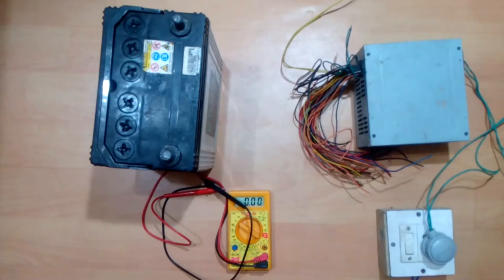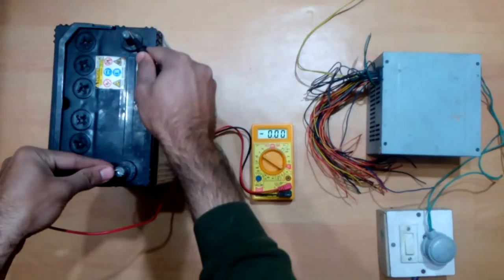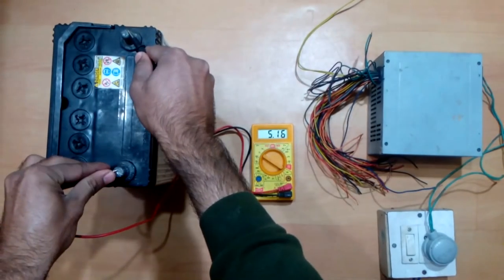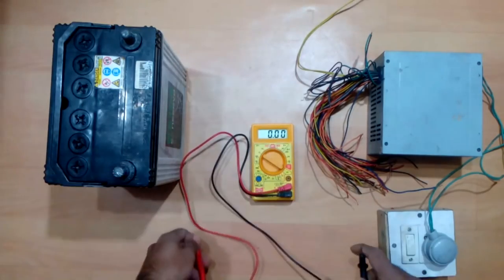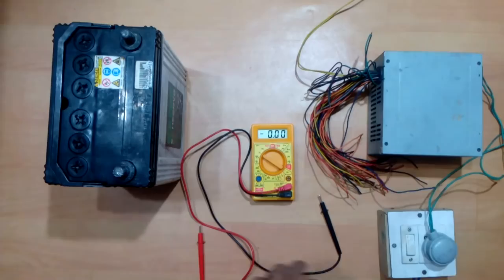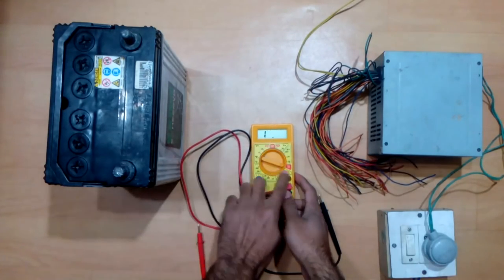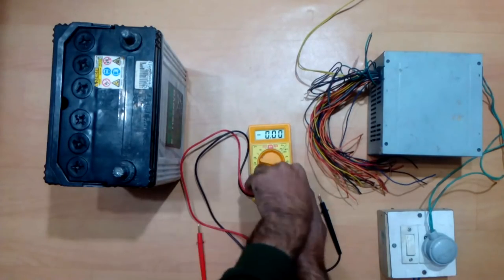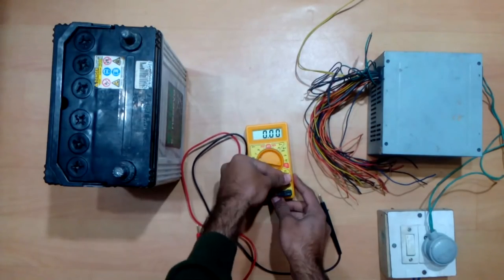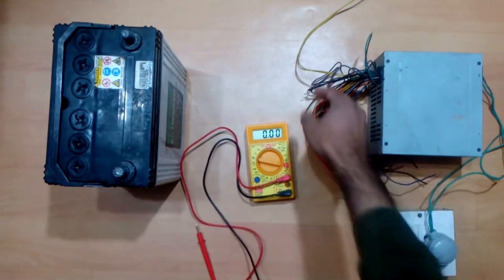But still I cannot use the 15 volt supply directly to start charging my car battery because the potential difference across the terminals of the battery is very less. Even if you do not have a multimeter or voltmeter to check the voltage across the battery terminals, I would suggest that you start charging your car battery using a 12 volt line for initial 10 to 15 minutes, and then you can switch over to a 15 volt line.